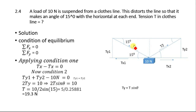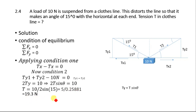The y-component of tension is 2T sine theta equals 10 newtons. Solving, T equals 10 divided by (2 sine 15°) = 5 divided by 0.2588, which equals 19.3 newtons. This is the total tension in the clothesline.